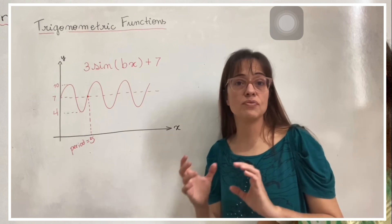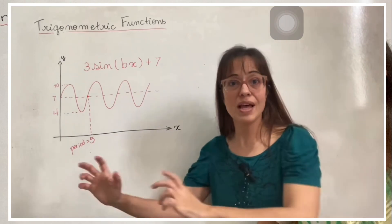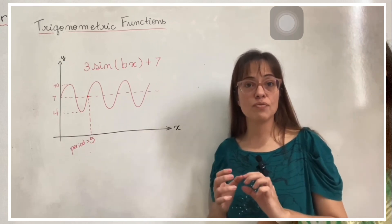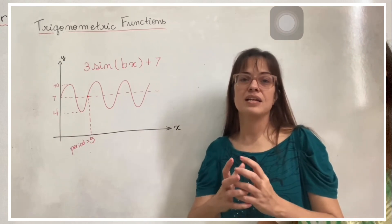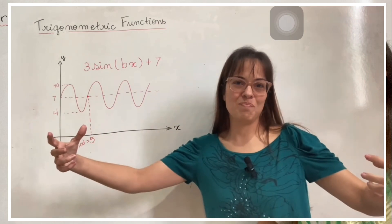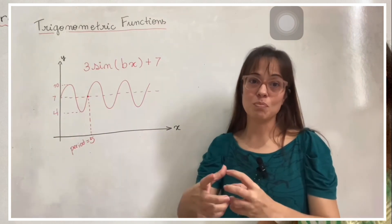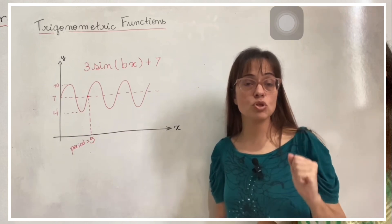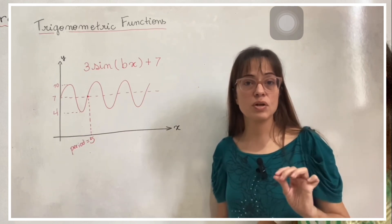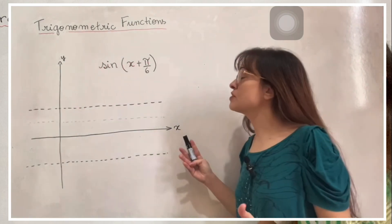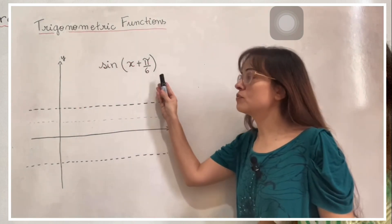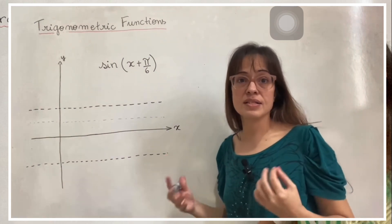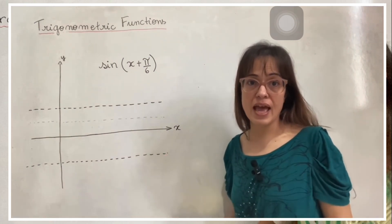For example, if you do f(x + 4), it goes to the left instead of to the right. If you do f(2x), instead of making it bigger, you're actually making it smaller — so f(2x) is a horizontal stretch of scale factor one-half. Here's the first example: x plus π/6, so that's π/6 to the left. And sine of π/6 is one-half.